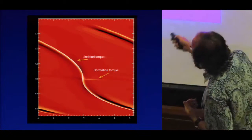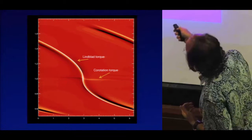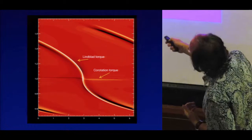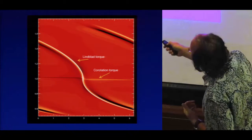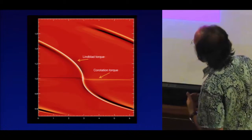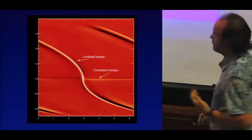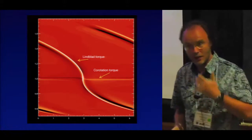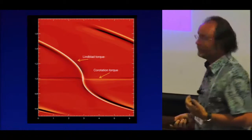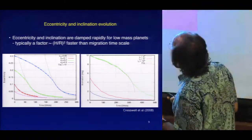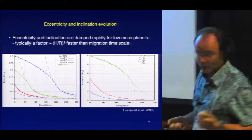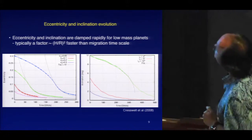This shows the development of the high-density region in front of the planet and the low-density region behind the planet when you have a negative entropy gradient in the disk, giving rise to the co-rotation torque.